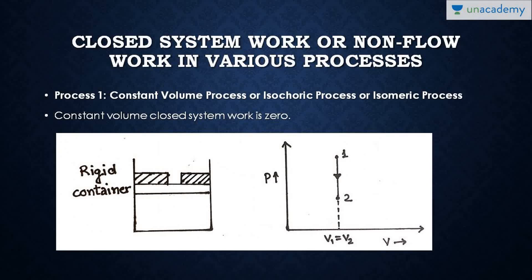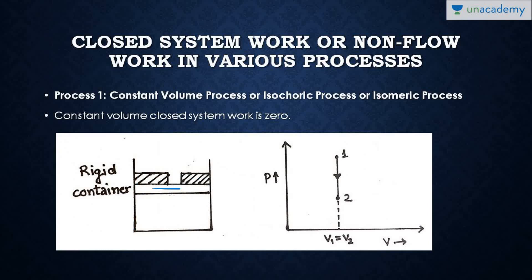The first process is the constant volume process, also called the isochoric process or isomeric process. We will be calculating the work transfer in this process. I'll be explaining all the processes with a piston-cylinder arrangement and with a PV diagram. For a constant volume process, the piston must be fixed. So we have fixed the piston in this piston-cylinder arrangement.